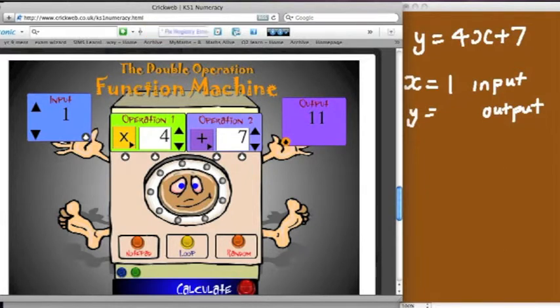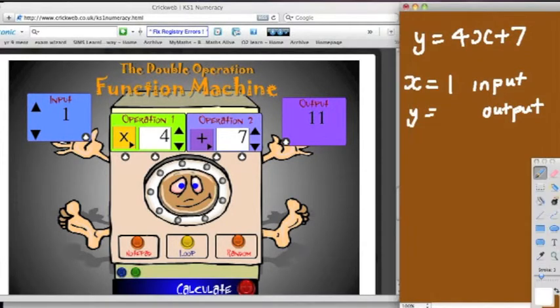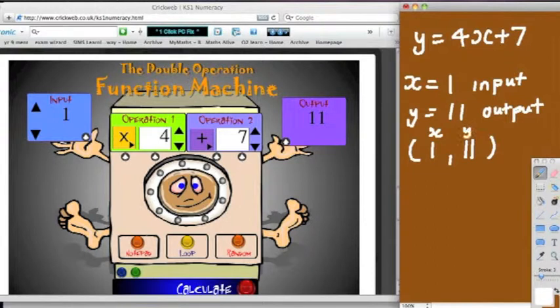Okay, so now I need to think about what coordinate that's given me, because you were asking me about the coordinates, Rich. The first coordinate I've got here is 1, 11, because 1 is the x number, and the y number that came out that went with 1 is 11, so that's the first coordinate, 1, 11. The first number's the x, the second number's the y.